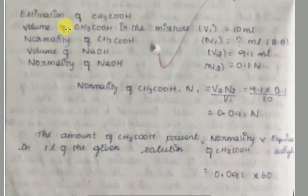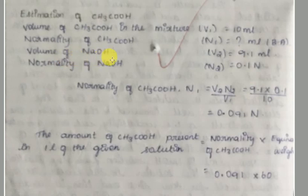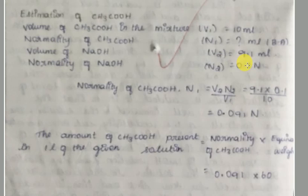Next is the estimation of acetic acid. The volume of acetic acid in the mixture is 10 ml. The volume of sodium hydroxide used to neutralize acetic acid is 14 minus 4.9 = 9.1 ml. The normality of sodium hydroxide is 0.1 N.